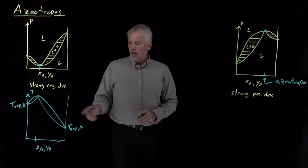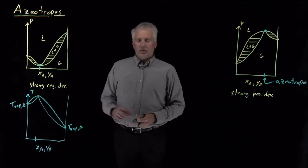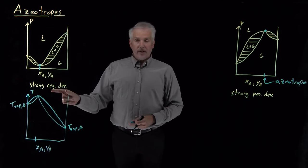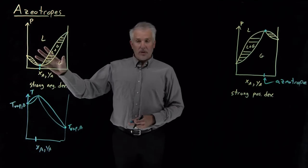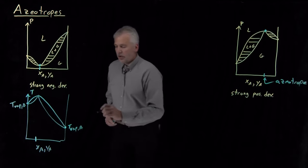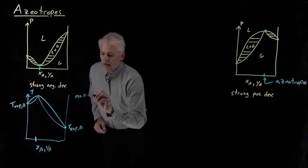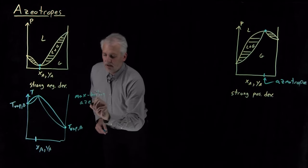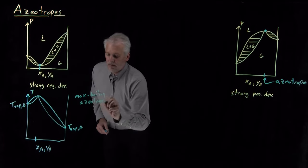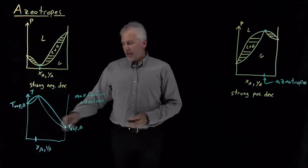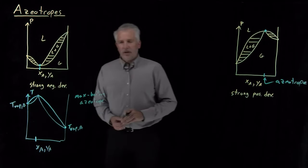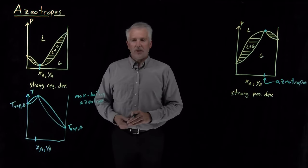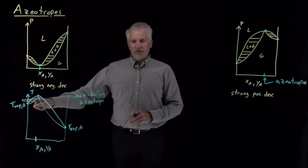You can describe these azeotropic-forming systems either as having strong negative deviations from Raoult's law — describing the pressure behavior — or as having a max boiling azeotrope. The azeotrope in this diagram is the highest boiling point of any composition of the system; this maximum corresponds to the largest possible boiling point achievable by mixing these two solvents together.